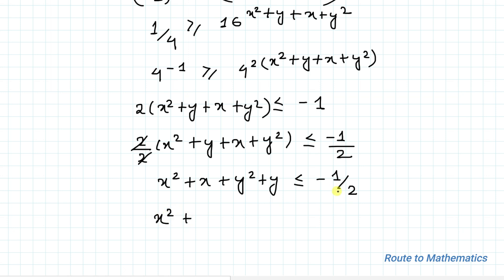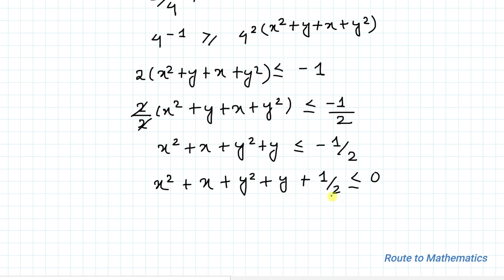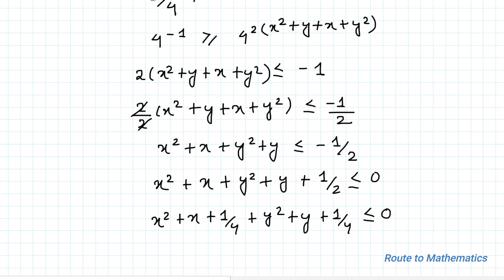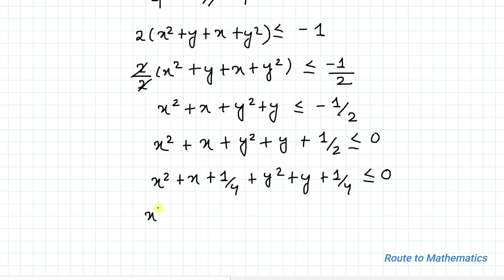In the next step, we take negative 1/2 to the left-hand side, giving us x² + x + y² + y + 1/2 less than or equal to 0. We can write 1/2 as 1/4 + 1/4, so we have x² + x + 1/4 plus y² + y + 1/4 less than or equal to 0.